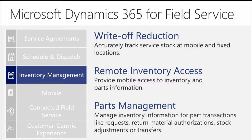Once that information is out there, it's also important to understand what inventory is associated with that work order. By doing things like write-off reduction, we can accurately track what's on a work order and ensure our inventory is up to the minute based on what is actually taking place on the mobile application in the field. We also expose those entities inside the application so technicians can see what is currently in inventory, what has been allocated to specific jobs, and manage the parts that will be necessary for each situation.